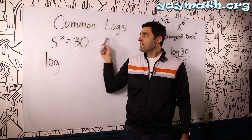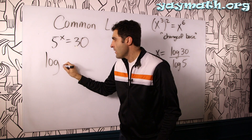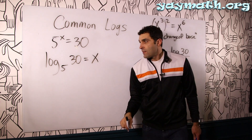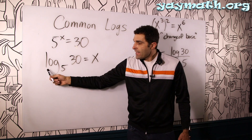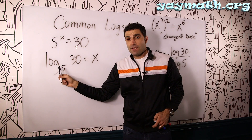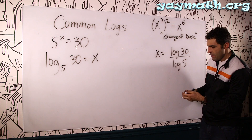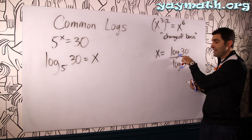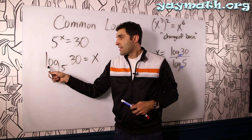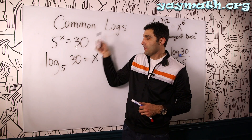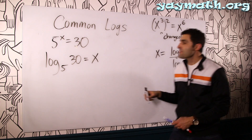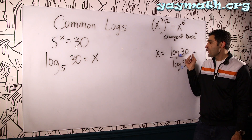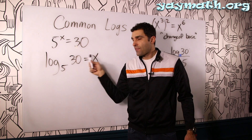Let's turn 5 to the x equals 30 into log form. The base is 5, the number itself is 30, and this equals the exponent x, so x equals log base 5 of 30. Many calculators let you plug in logs with non-common bases. But if you see no base written, you imply it's base 10. So it turns out that x equals log base 5 of 30, and x also equals log of 30 over log of 5 — that's the change of base formula.